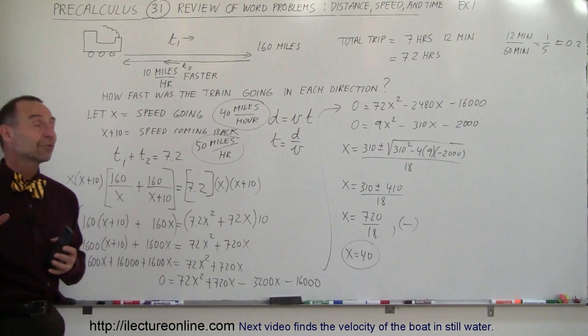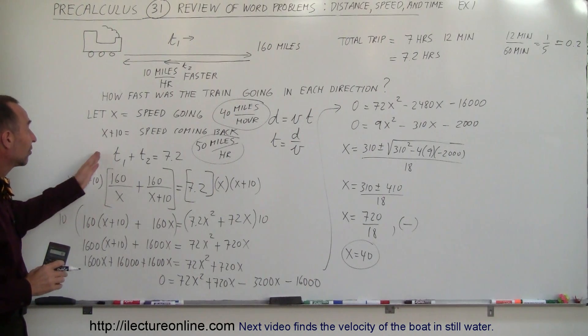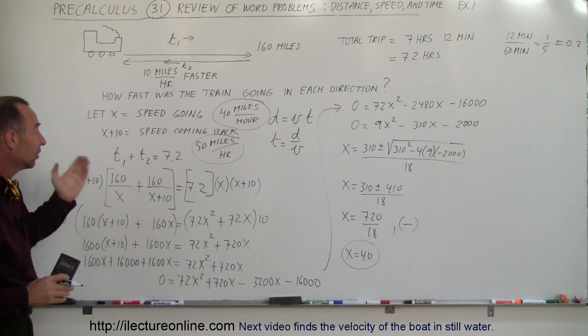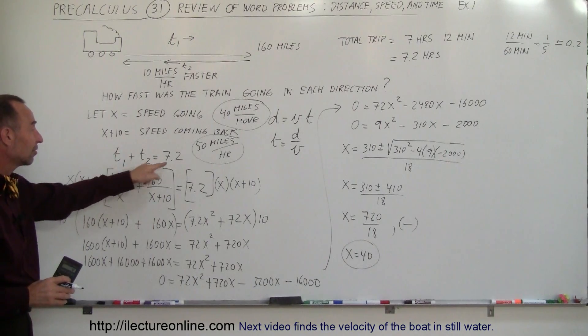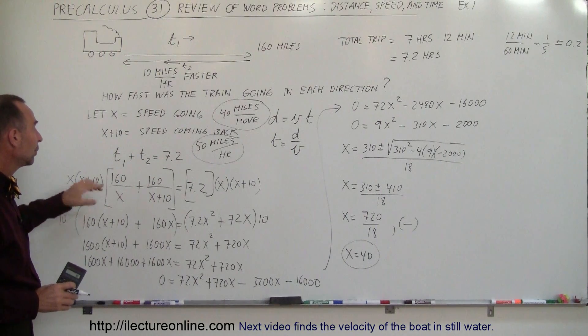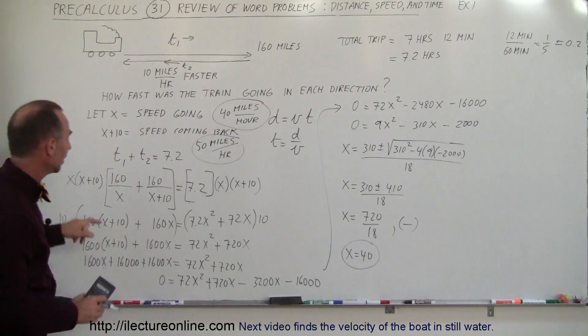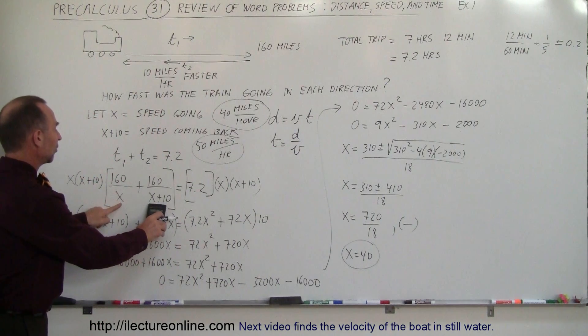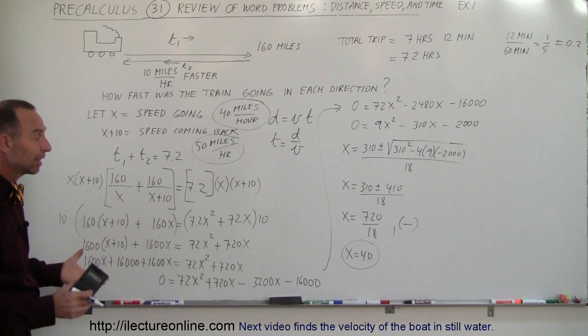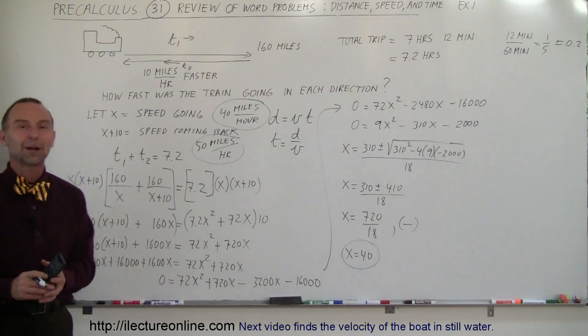And that's how we do that. The key to these types of problems is to set up some sort of equation. In this case, we knew that the sum of the two times going and coming is 7.2, and when we then replace that by the definition of time, which is distance divided by velocity, knowing the distance and expressing the velocity in terms of x, we can solve that equation for x. And that was our approach on this particular problem.